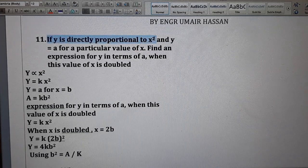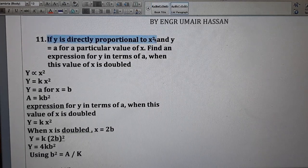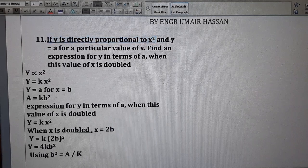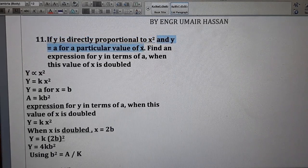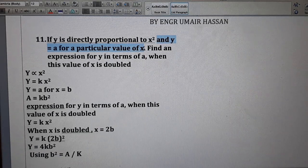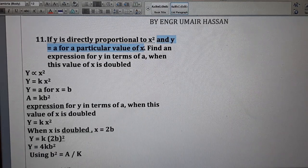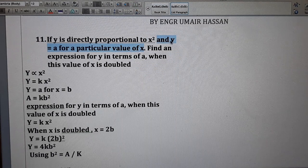If y is directly proportional to x square, underline this one, and y is a for a particular value of x. We do not know the value of x, but for a particular value of x, y is equal to a.